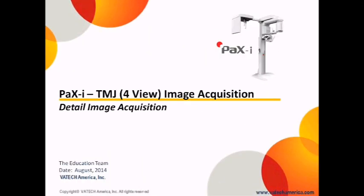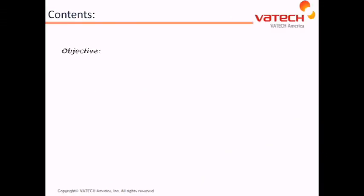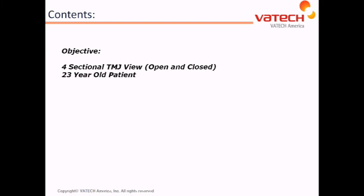Welcome to the VATEC Video Education Center. In our session today, we're going to review the detailed steps to acquire a four-view TMJ image with the PaxEye 2D system. The objective is to be able to capture a four-sectional view with the mouth in an open and closed position on a 23-year-old patient with a normal body type.